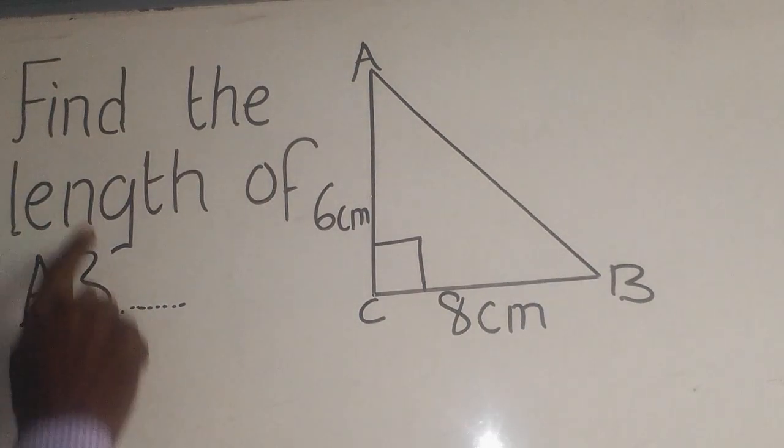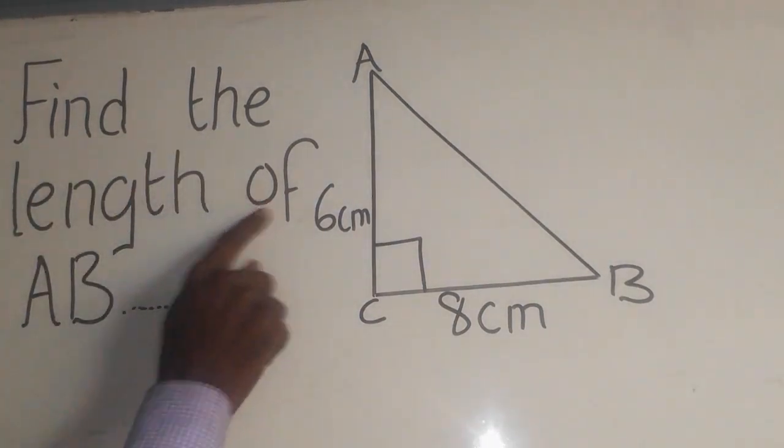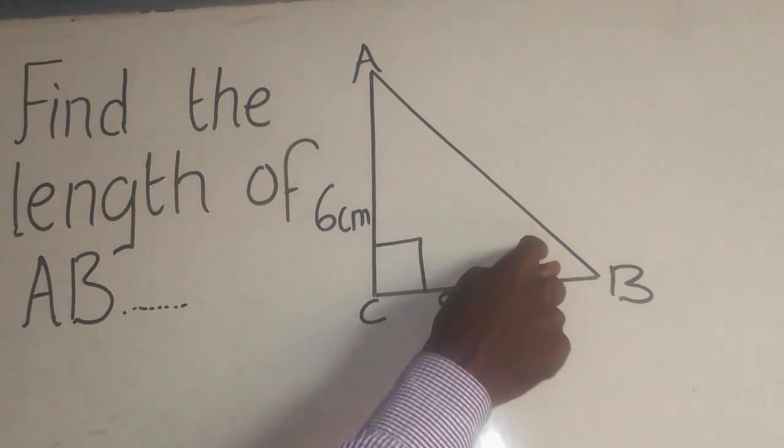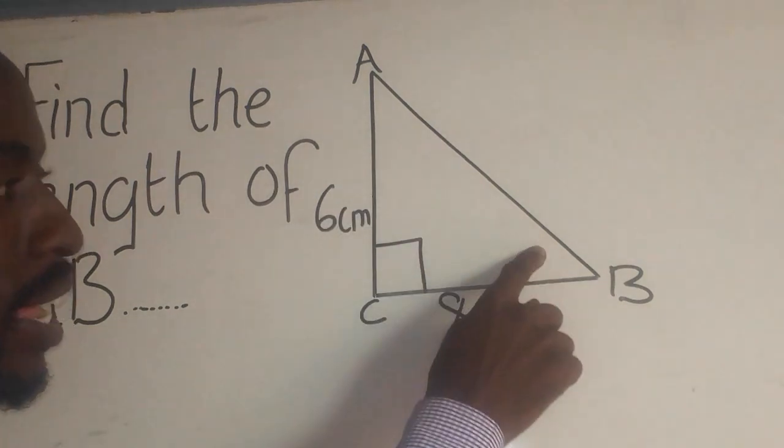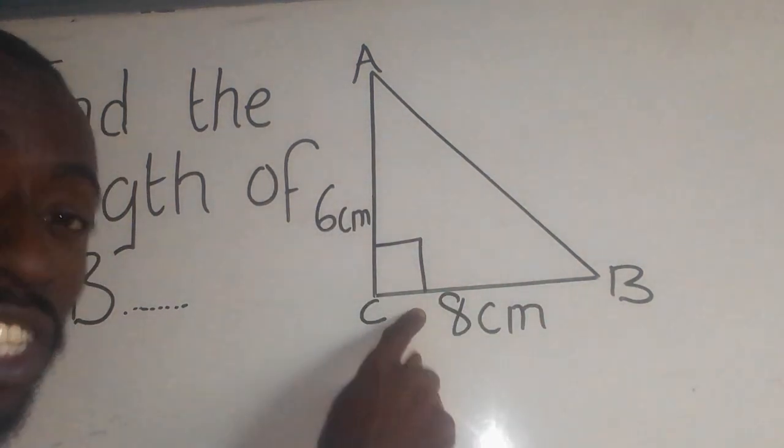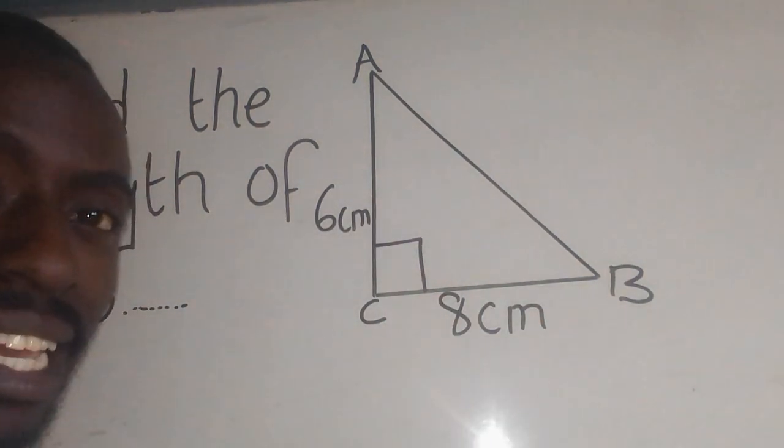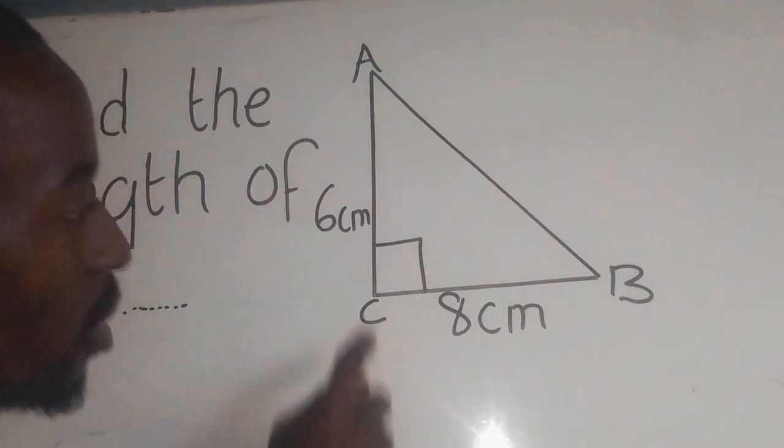A mathematics question that says find the length of AB. When they say length, it means the distance of AB. Now take note that this type of triangle is known as a right-angled triangle because of the box you are seeing here.